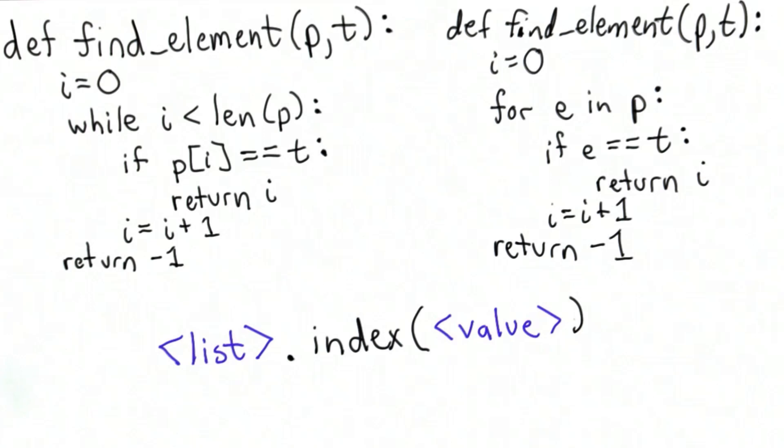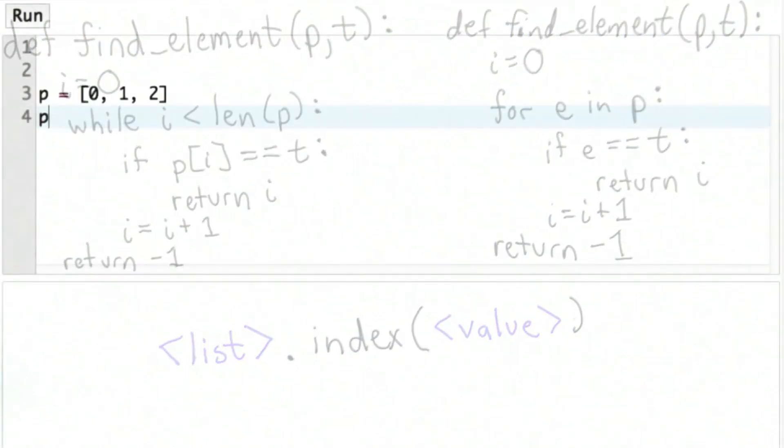So let's look at what happens in the Python interpreter. I'll define a variable p and give it the value of the list 0, 1, 2. If we invoke index on p, passing in 2, we get as the result 2, which is the position in p where the value 2 occurs.